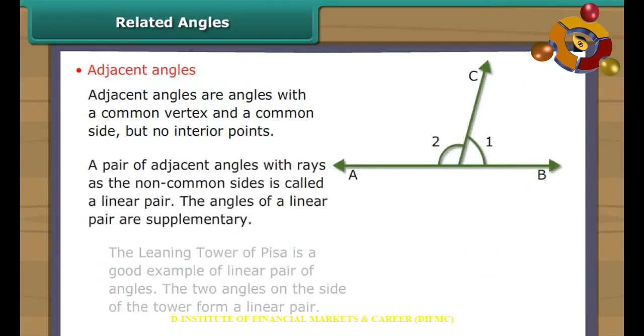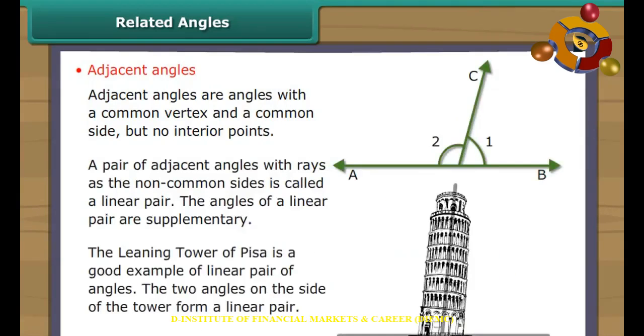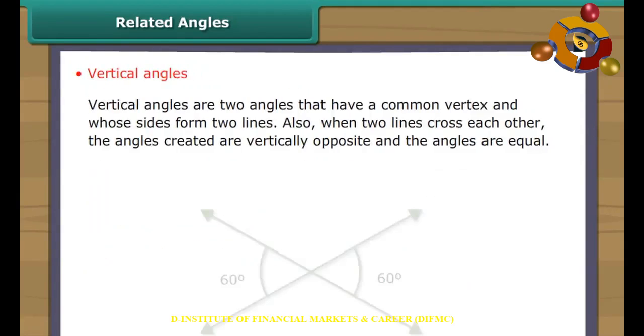A pair of adjacent angles with rays as the non-common sides is called a linear pair. Vertical angles are two angles that have a common vertex and whose sides form two lines.